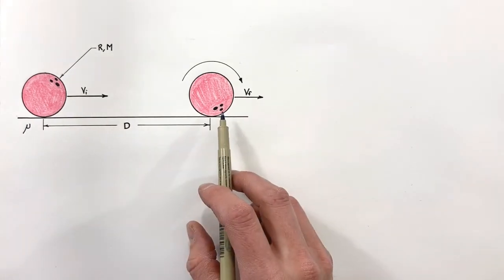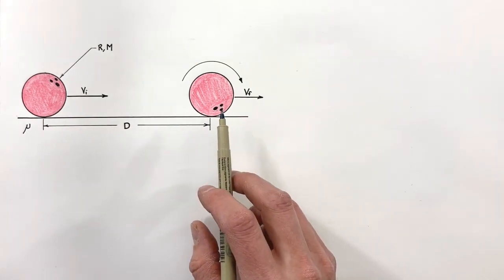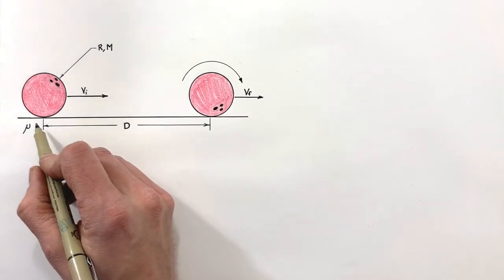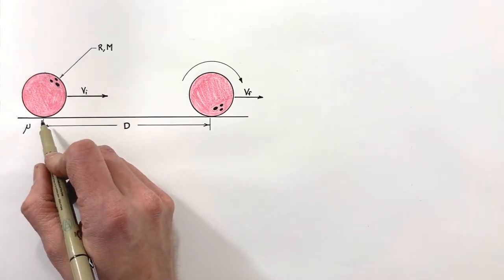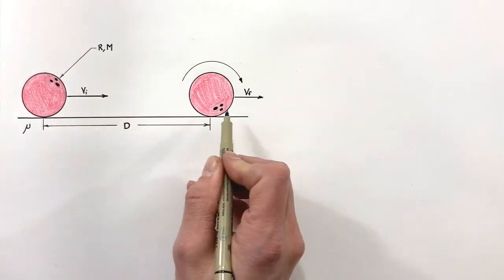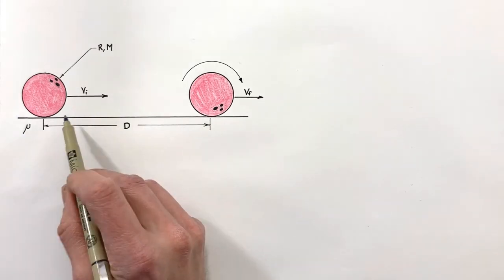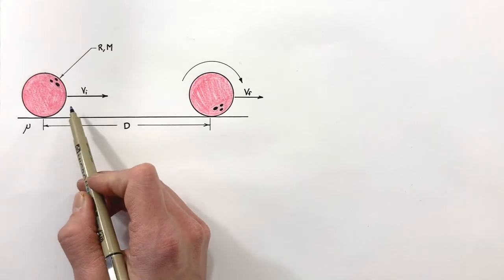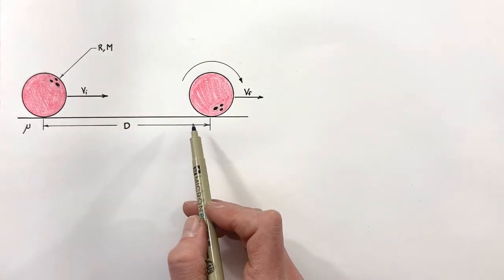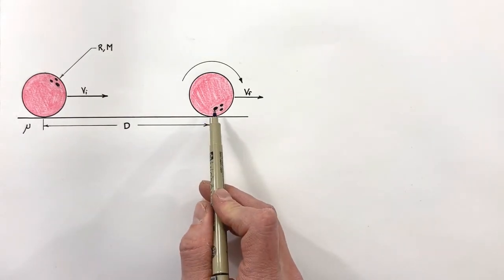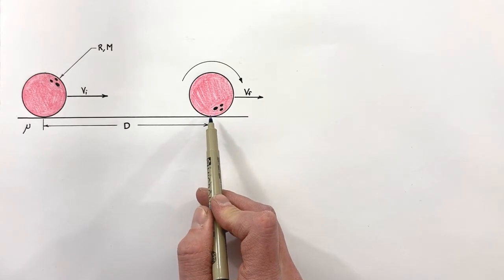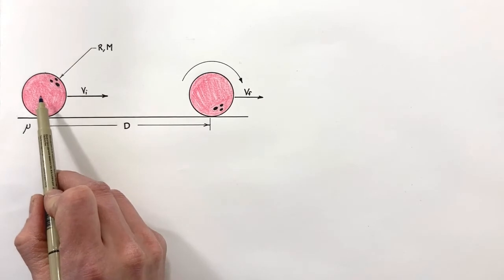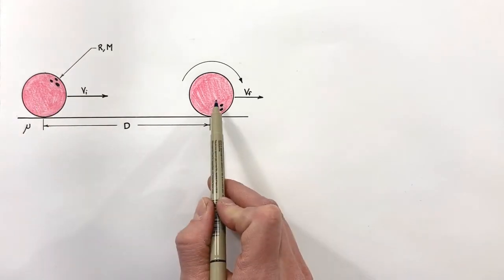Today I'm going to solve this problem using angular momentum. The issue that always comes up when dealing with angular momentum is choosing the right point to look around, because depending on where you choose to measure angular momentum you can get different values. What we want to do in this problem is find a point around which there are no torques acting on the ball.